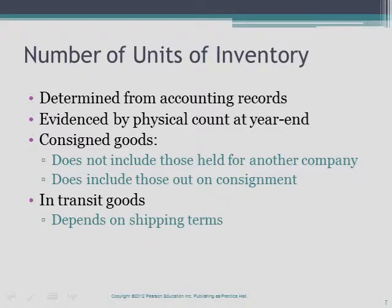The number of inventory units on hand is determined from accounting records backed up by a physical count of goods at year end. Companies do not include in their inventory any goods they hold on consignment because these goods belong to another company, but they do include their own inventory that is out on consignment and held by another company. Consigned goods are always reported in the accounting records of the company that owns them, regardless of where they are physically being held for sale. Companies include inventory in transit that, according to shipping terms, legally belongs to them as of year end.